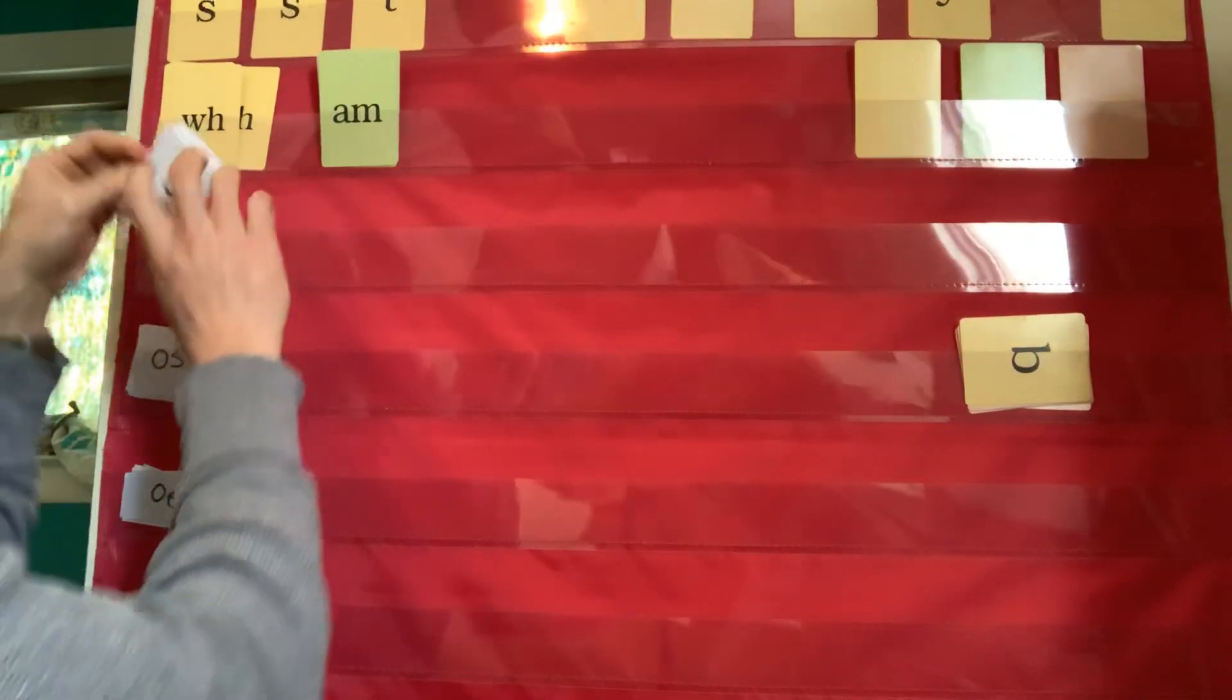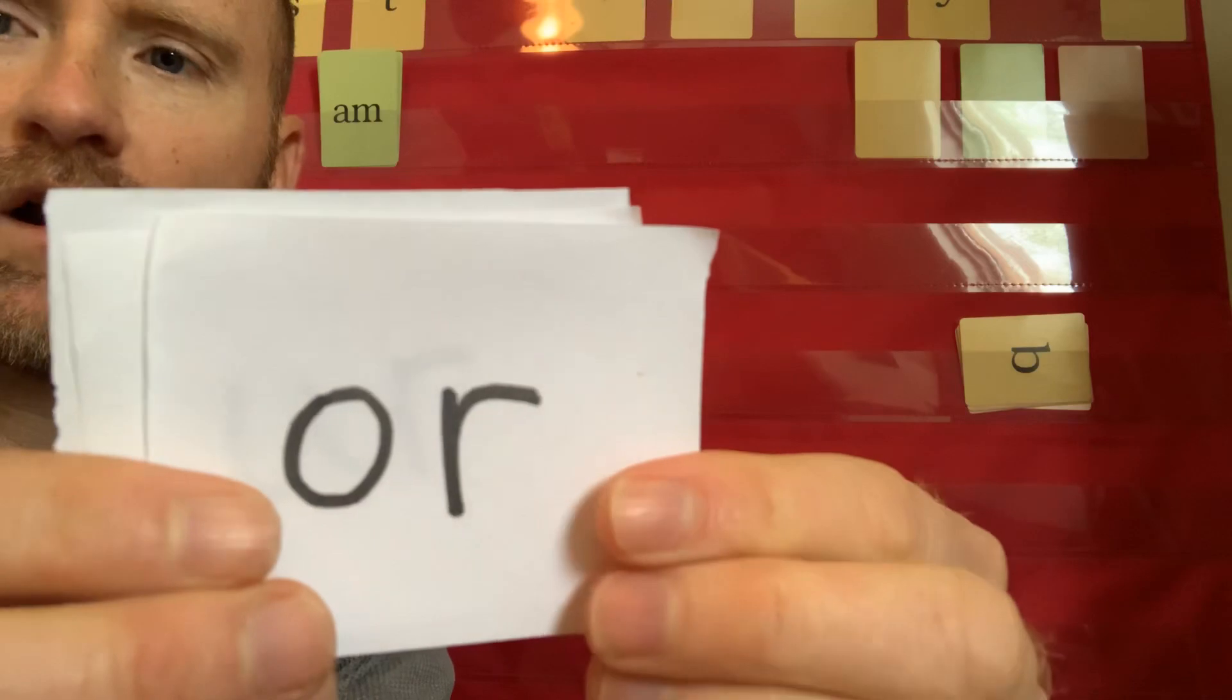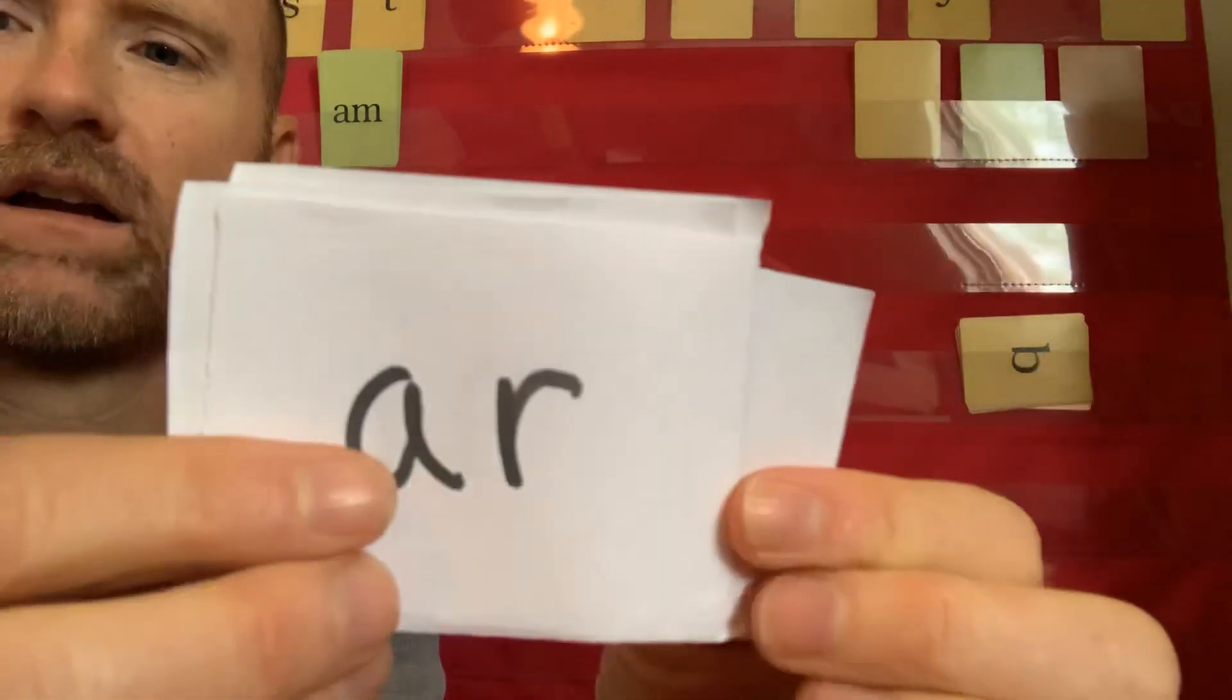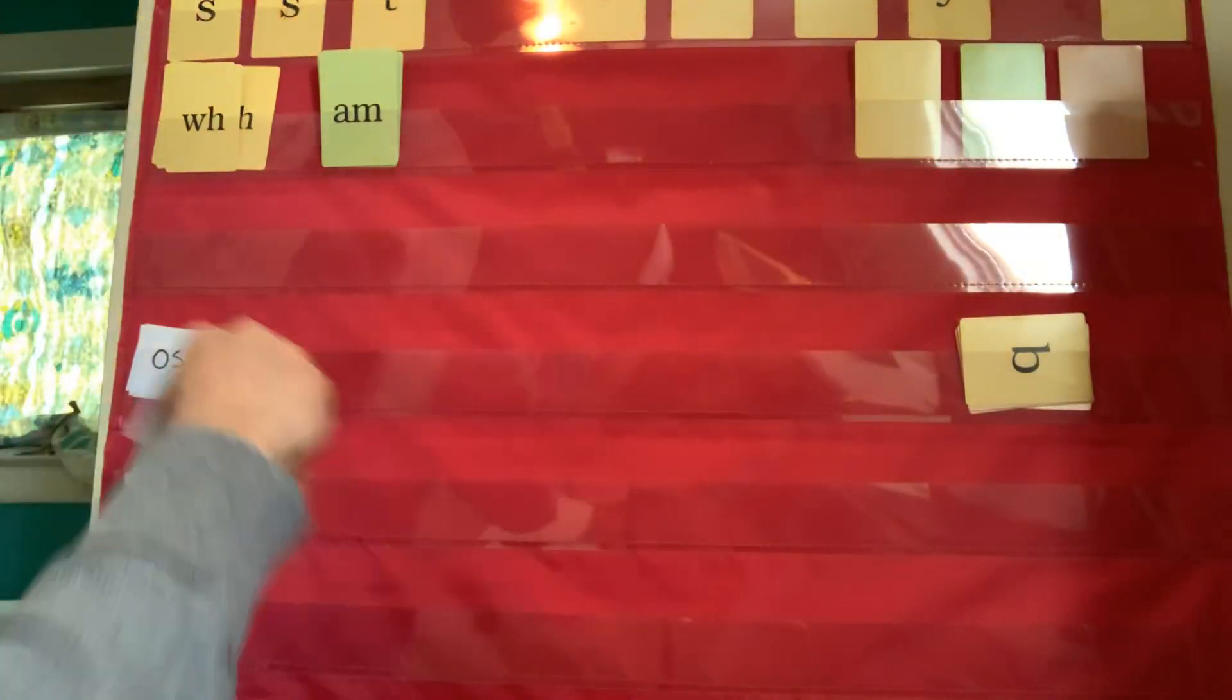Our controlled vowels. We'll be revisiting these in just a moment. What sounds E-R make? Er. O-R? Or. U-R? Er. A-R? R. I-R? Er. Good.